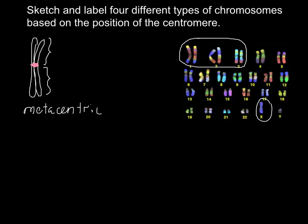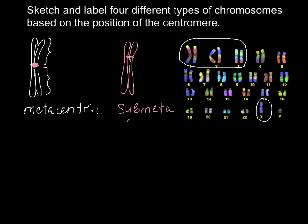Another type of chromosome is called submetacentric. Here are two sister chromatids, and in submetacentric chromosomes the centromere is a little bit closer to one end of the chromosome. As you can see, there is one long arm and one short arm present.